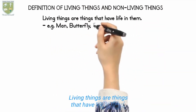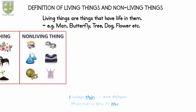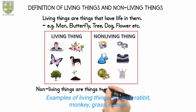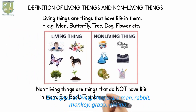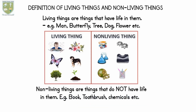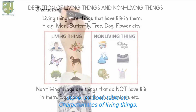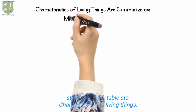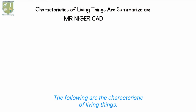Definition of living things and non-living things. Living things are things that have life in them. Examples of living things are man, rabbit, monkey, grass, mango. Non-living things are things that do not have life in them. Examples of non-living things include stone, air, book, table, etc.